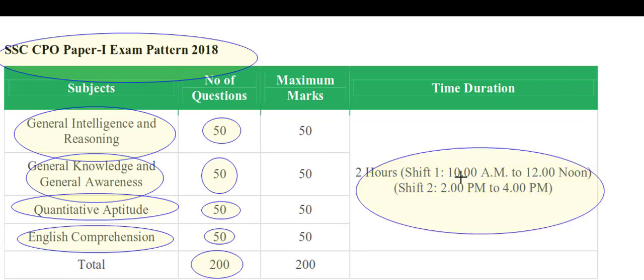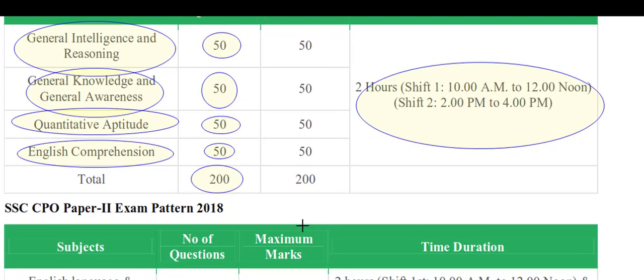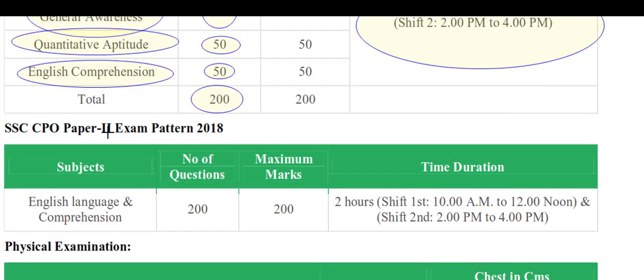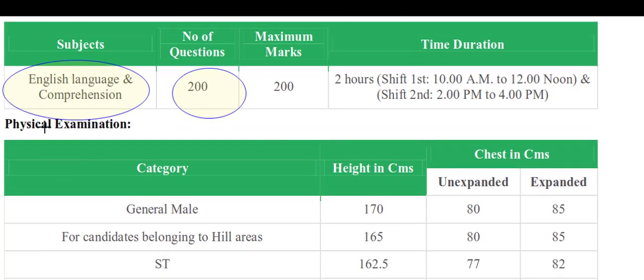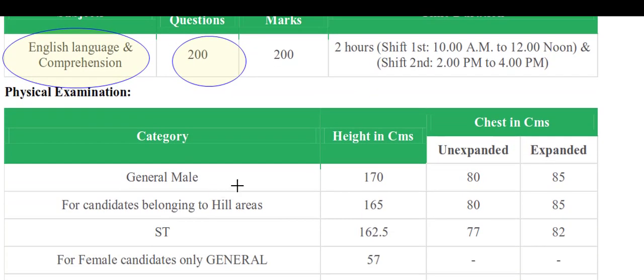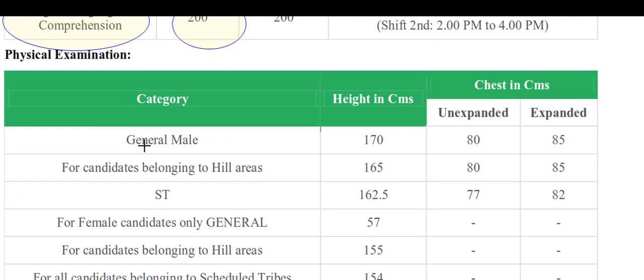SSC CPO Paper 2 is English Language and Comprehension for 200 marks. After that, there will be a physical examination.